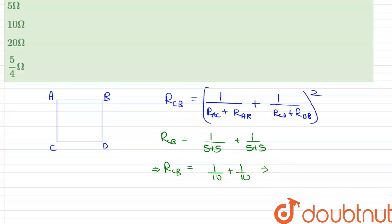And this implies that R_CB is equal to - sorry, here is the inverse of all of these - and R_CB is equal to 2 by 10 inverse. And on this calculation, we can say that R_CB is equal to 5 ohms.